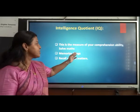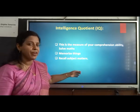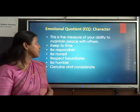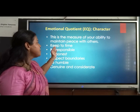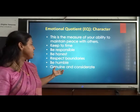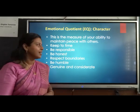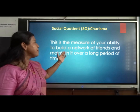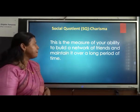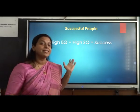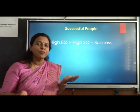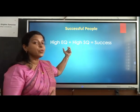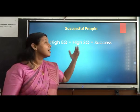Intelligence quotient or IQ is what helps the child to comprehend, reproduce, and memorize things, and we give a lot of importance to that in school. The next is emotional quotient or EQ, which is actually the character-building intelligence — it helps the child to keep time, be responsible, be honest, respect boundaries, be humble, genuine, and considerate. The next is the social quotient or social intelligence, which determines the charisma of the child — it is the measure of your ability to build a network of friends and maintain it over a long period of time. The success of a person depends upon the emotional quotient and the social quotient.